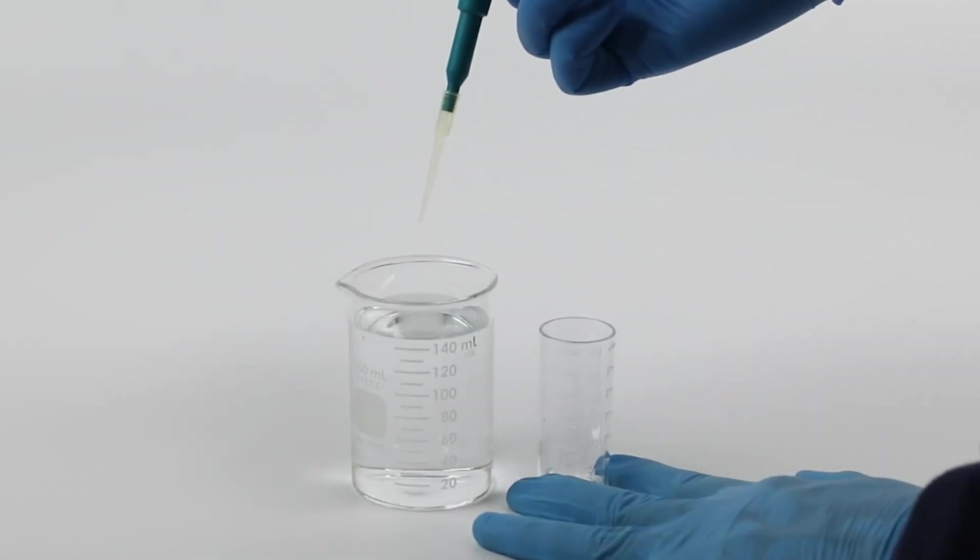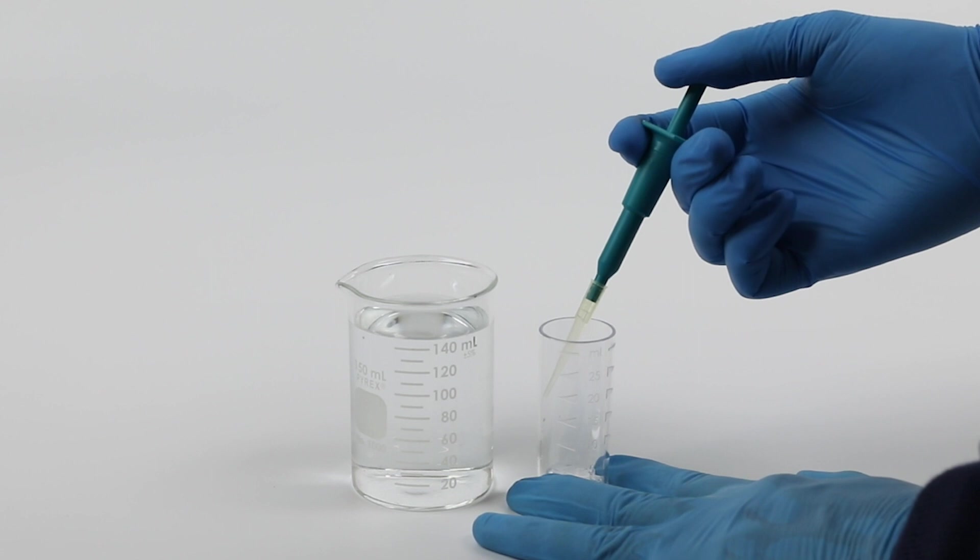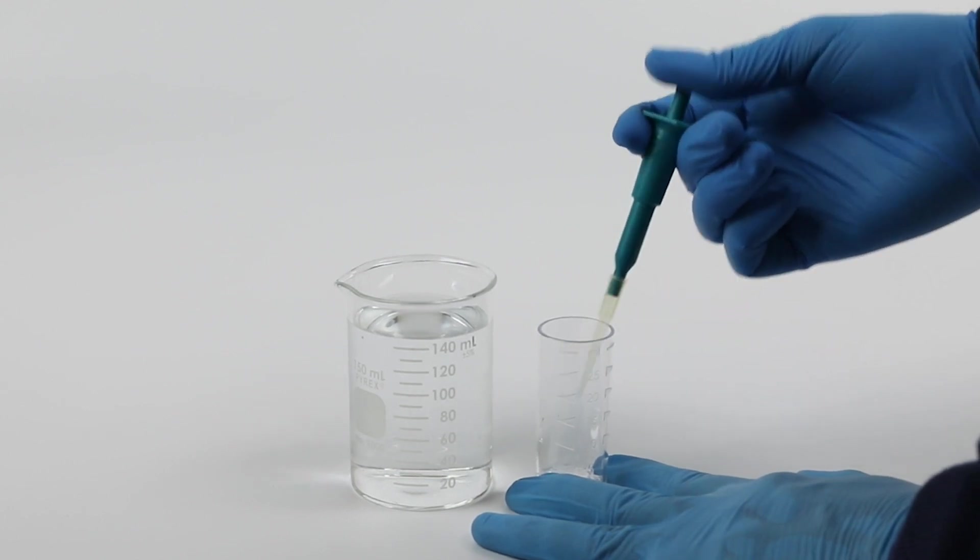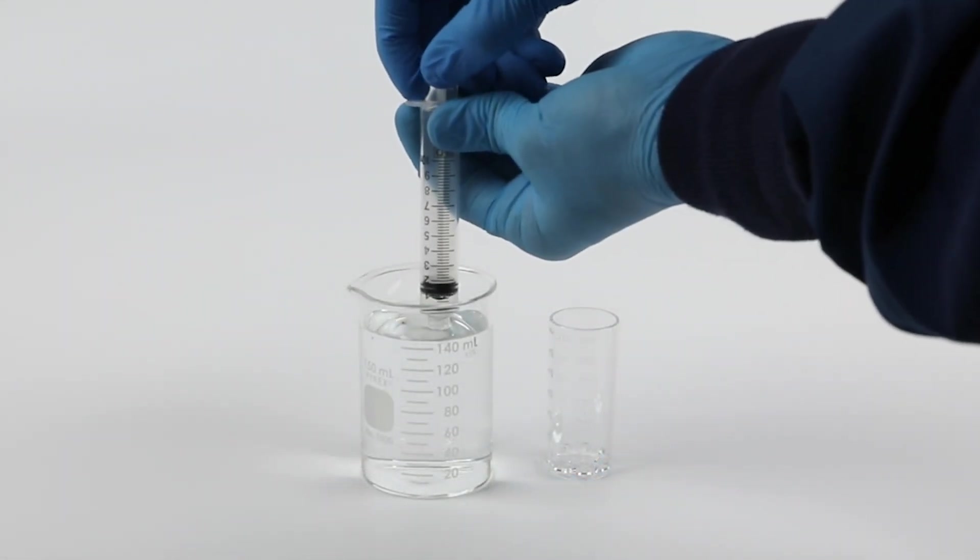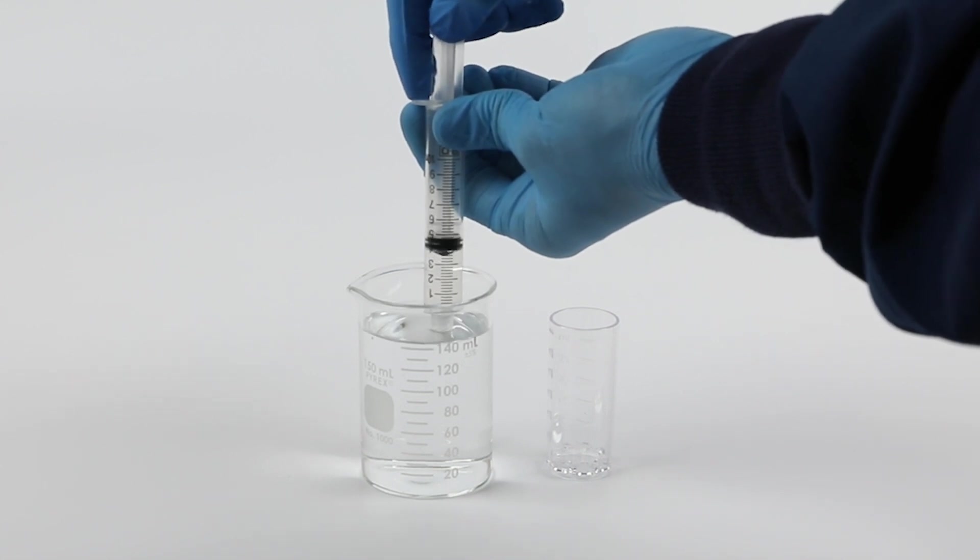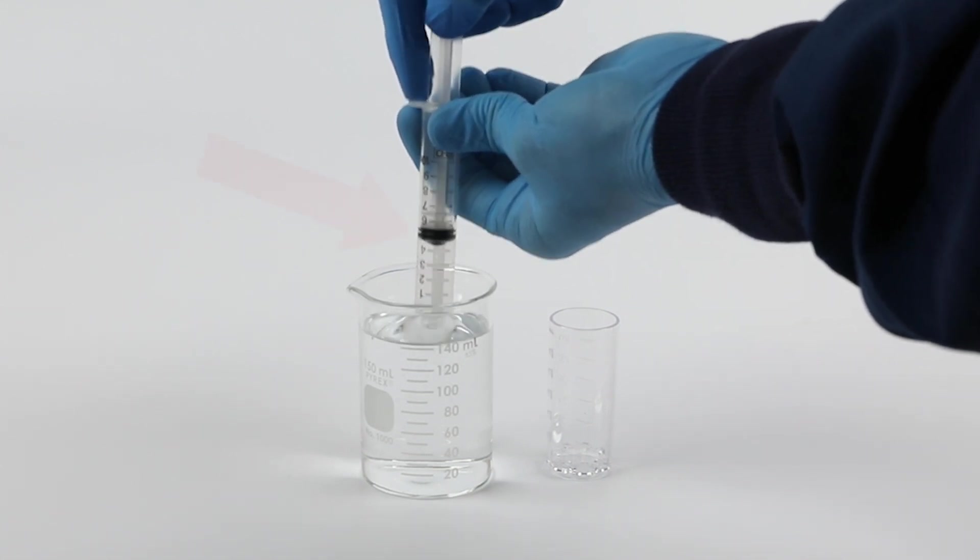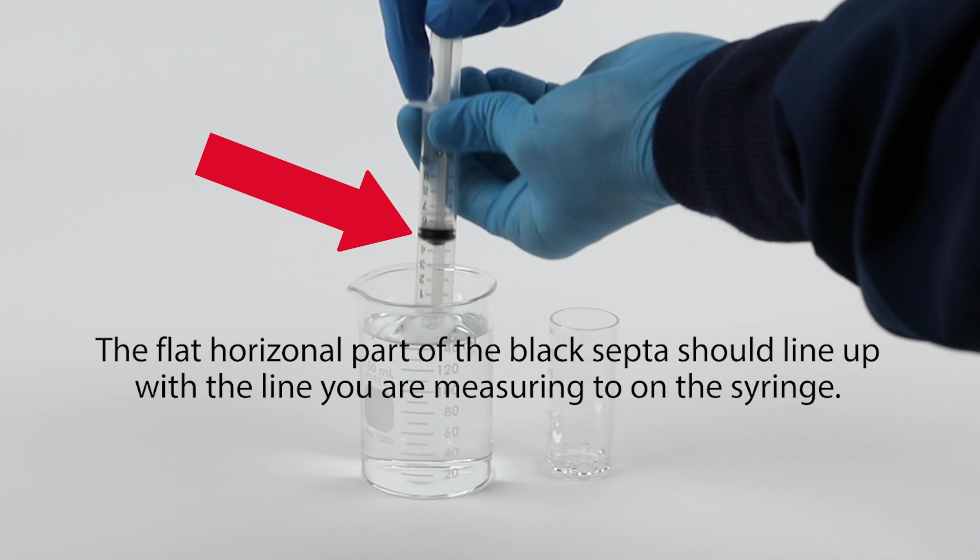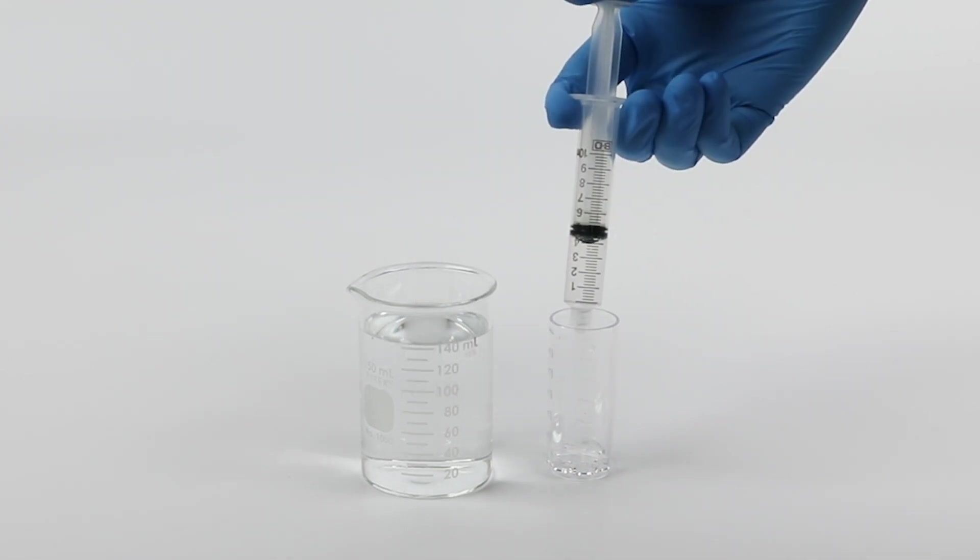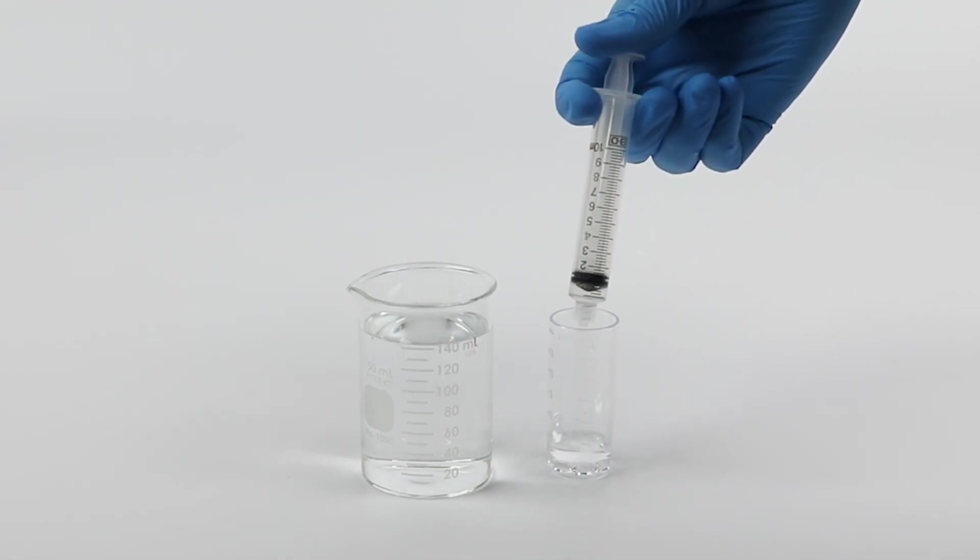To dispense the sample aliquot, position the tip over the sample cup and depress the plunger. If using a syringe, immerse the tip into the sample and draw the plunger back to the indicated line. Dispense sample into the sample cup by pressing down on the plunger.